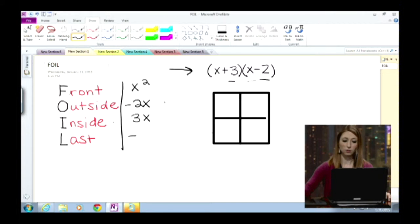So 3 times negative 2 would give me negative 6. Then what you do is you put all of these terms together to get the actual answer of what those multiply to equal. So we would say x squared minus 2x plus 3x minus 6. And then we can combine like terms to get x squared plus 1x minus 6.